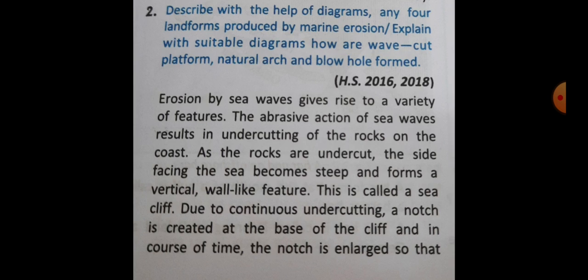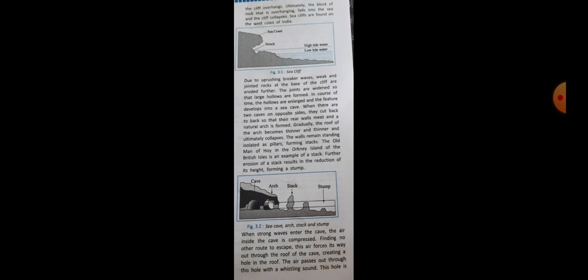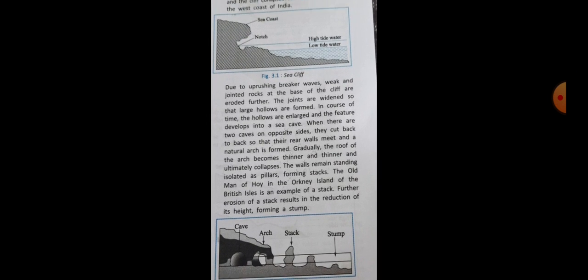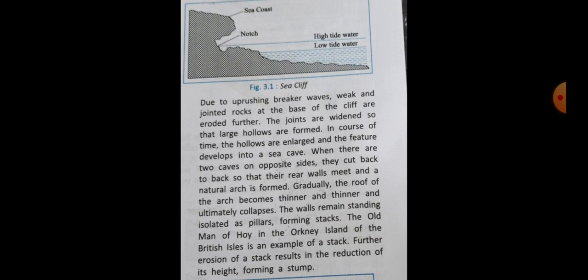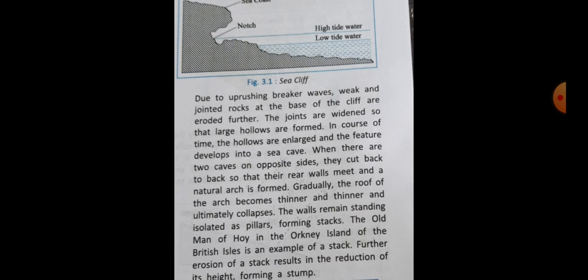The steep face forms a vertical wall-like feature called a sea cliff. Due to continuous undercutting, a notch is created at the base of the cliff. In the course of time, the notch is enlarged so that the cliff overhangs. Ultimately the block of rock that is overhanging falls into the sea and the cliff collapses. Sea cliffs are found on the west coast of India. A diagram is given here — you have to draw this diagram.